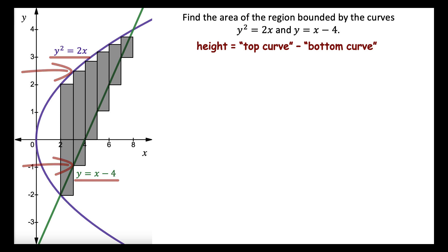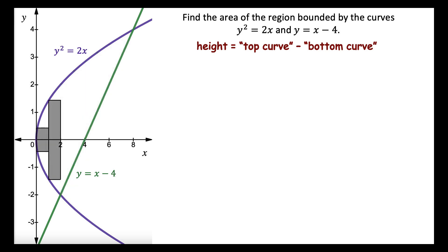However, for each of the approximating rectangles to the left of x equals 2, the top left corner rests on the curve y squared equals 2x and the bottom left corner also rests on the curve y squared equals 2x. So the height of each of these rectangles is the difference between y squared equals 2x and itself? Wait — that difference is zero. But the height is not zero. So something is wrong.